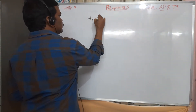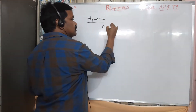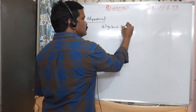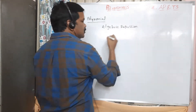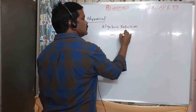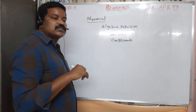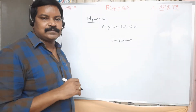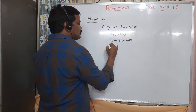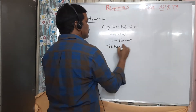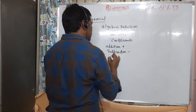A polynomial is an algebraic expression which consists of variables and coefficients, and it involves operations like addition, subtraction, and multiplication.